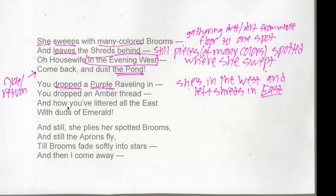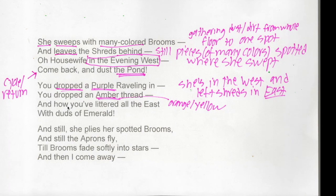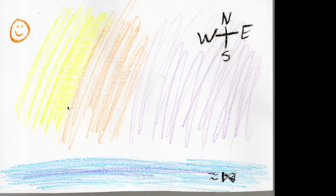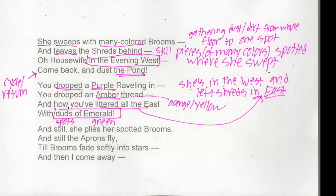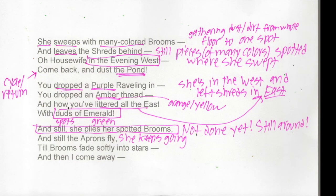You dropped a purple raveling in — she's in the west and she's left shreds behind in the east, so I drew my purple there. You dropped an amber thread — amber is an orangish-yellowish color, so I filled in some orange and yellow going from east to west. With duds of emerald — duds means spots, and emerald, for those who've watched The Wizard of Oz, is green. So I drew in some dots of green. And still she plies her spotted brooms — she's not done yet, she's still hanging out.